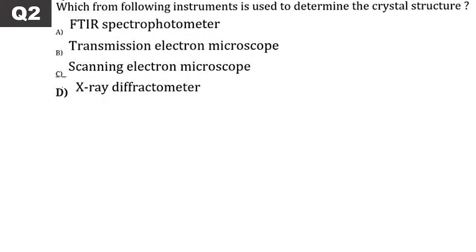Next: Which instrument is used to determine crystal structure? From solid state, we know that crystal structure — how atoms and molecules are arranged — is determined using X-ray crystallography technique, i.e., X-ray diffractometer, shortly written as XRD.